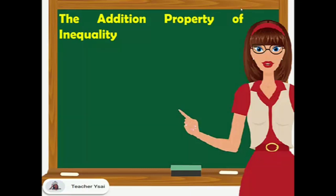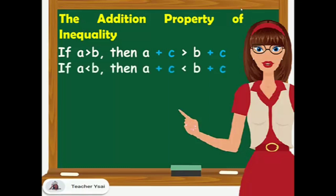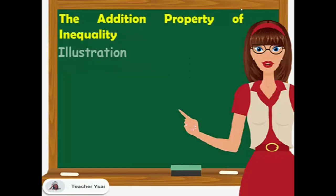First, we have the addition property of inequality. If A is greater than B, then adding C to both sides of the inequality, A plus C is still greater than B plus C. If A is lesser than B, then adding C to both sides of the inequality, A plus C is still lesser than B plus C.